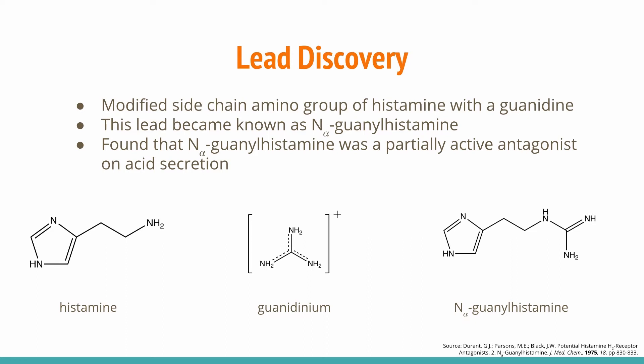They tried replacing the side-chain amino group with a guanidine — a strongly basic group that is protonated at physiological pH. It was a promising functional group because its derivatives have a wide range of biological properties, such as antimicrobial properties and inhibition of amines. For example, guanidinium, which is positively charged, has a high affinity for anionic sites in biological systems, creating the potential for guanidine to antagonize amines at receptor sites. This lead, a histamine with a guanidine, became known as N-alpha guanohistamine. Testing showed it was a partially active antagonist on gastric acid secretion.